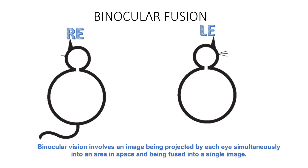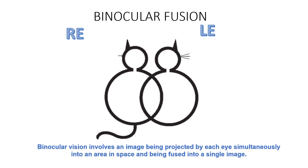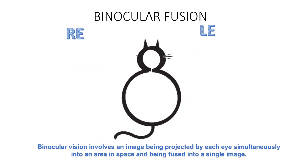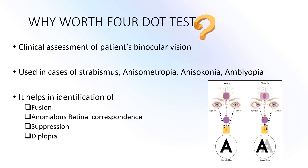This is a clinical test which is mainly used for assessing the patient's degree of binocular vision. By definition, binocular vision involves an image being projected by each eye simultaneously into an area in space and being fused into a single image. The clinical use of the Worth Four Dot test is to assess the patient's binocular vision. It is mainly used in cases of strabismus, anisometropia, anisoconia, and amblyopia.